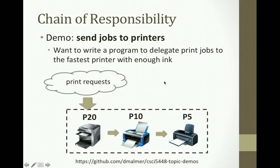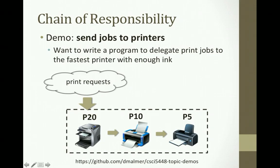I was thinking about an office setting where the office has a bunch of printers and people are constantly sending print requests. The printers might be different speeds and sizes, but anyone sending a print request wants the fastest printer that can handle their request to do it. So you send a print request in, check the biggest fastest printer — if it can handle it, print on that. If it can't, if it's too low on ink, then move to the next fastest and the next fastest. It really follows this chain of responsibility.